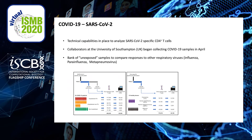We began sorting cells at the end of April and in the space of two weeks we had sorted over 650,000 antigen-reactive CD4 T cells from 45 donors. Following sequencing and extensive quality controls we obtained a single-cell data set with over 130,000 virus-reactive CD4 T cells.